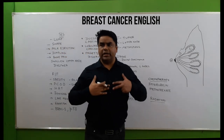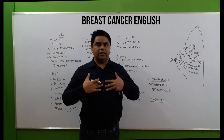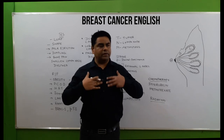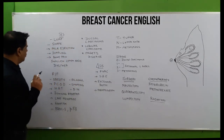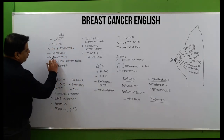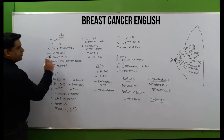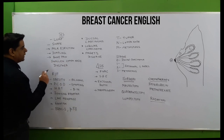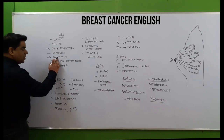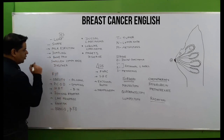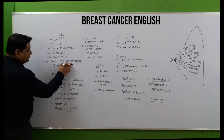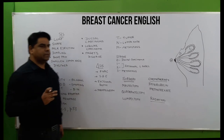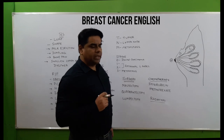There can be bone pain. The ribs are present in front of the chest, and the pectoral muscle is present over the chest, supported by Cooper's ligament. Metastasis of breast cancer can affect ribs and intercostal muscles, which can cause bone pain.